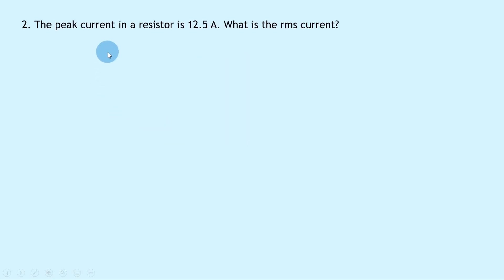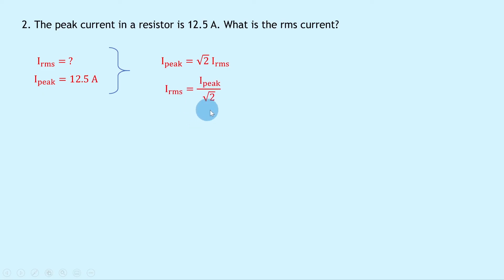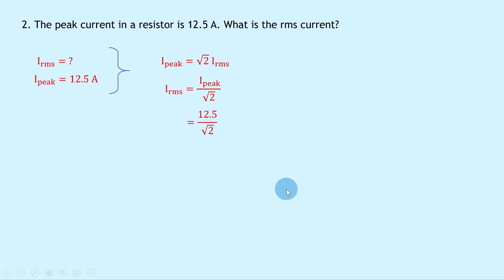Lastly, question two says that the peak current in a resistor is 12.5 amps. What is the RMS current? Writing down what we know, we're trying to find Irms, and we know that Ipeak is 12.5 amps. Writing down our equation, we have Ipeak equals root 2 times Irms. Rearranging for Irms gives Irms equals Ipeak over root 2. Substituting in gives 12.5 over root 2, and putting that into your calculator should give you an answer of 8.8 amps.